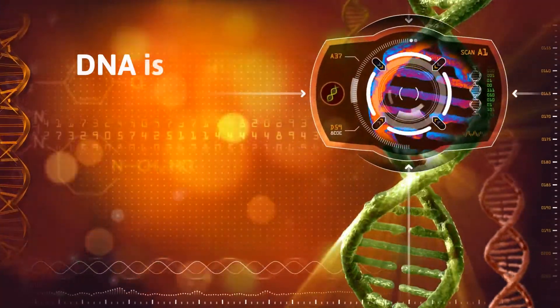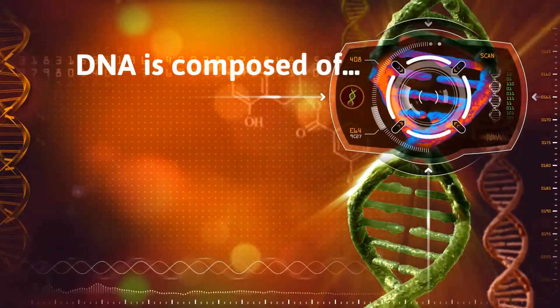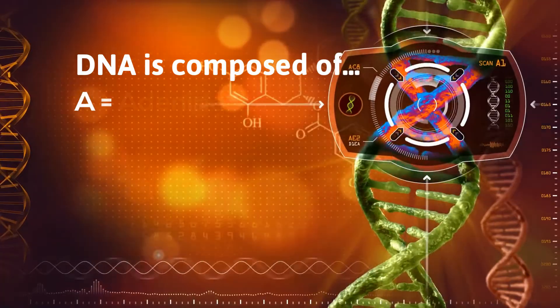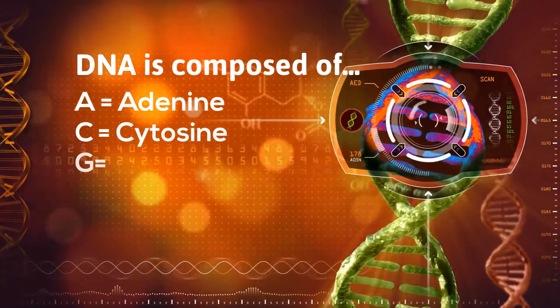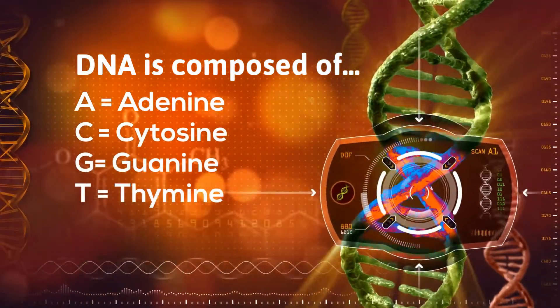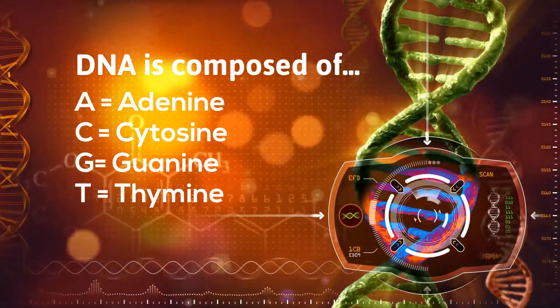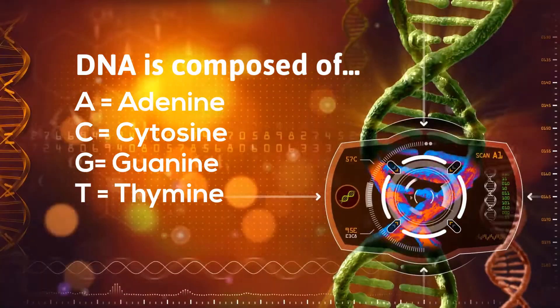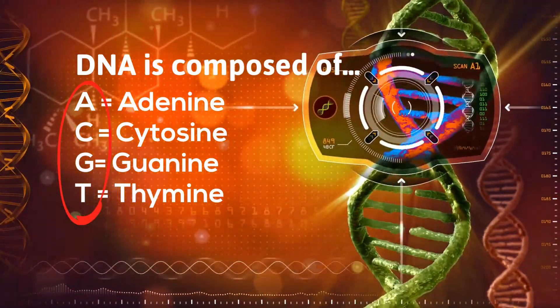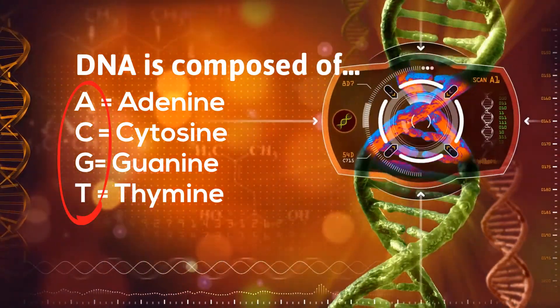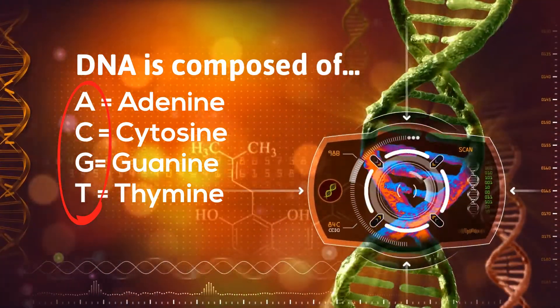DNA is made up of four nitrogen bases: adenine, cytosine, guanine, and thymine. Let's shorten these to A, C, G, and T.